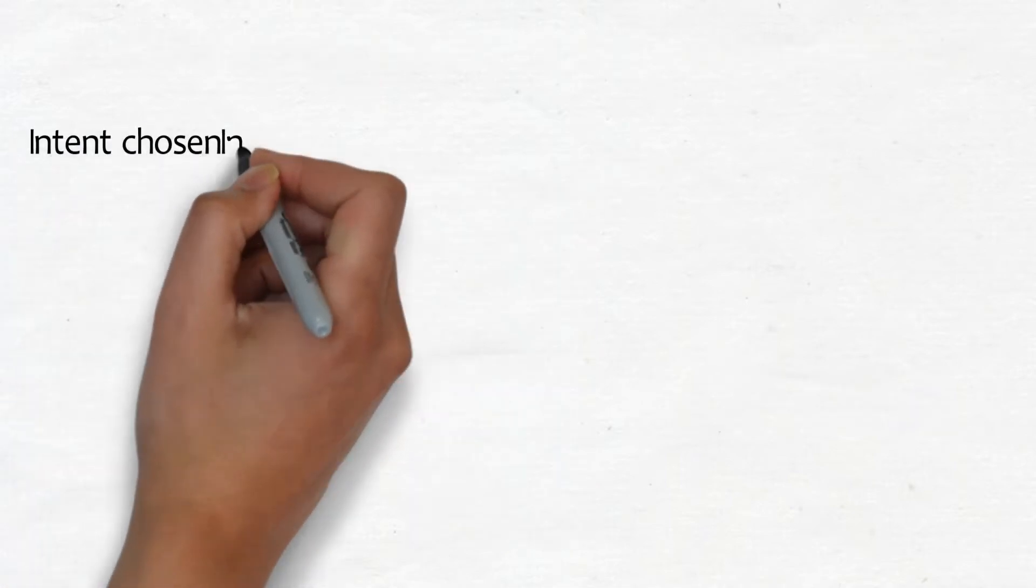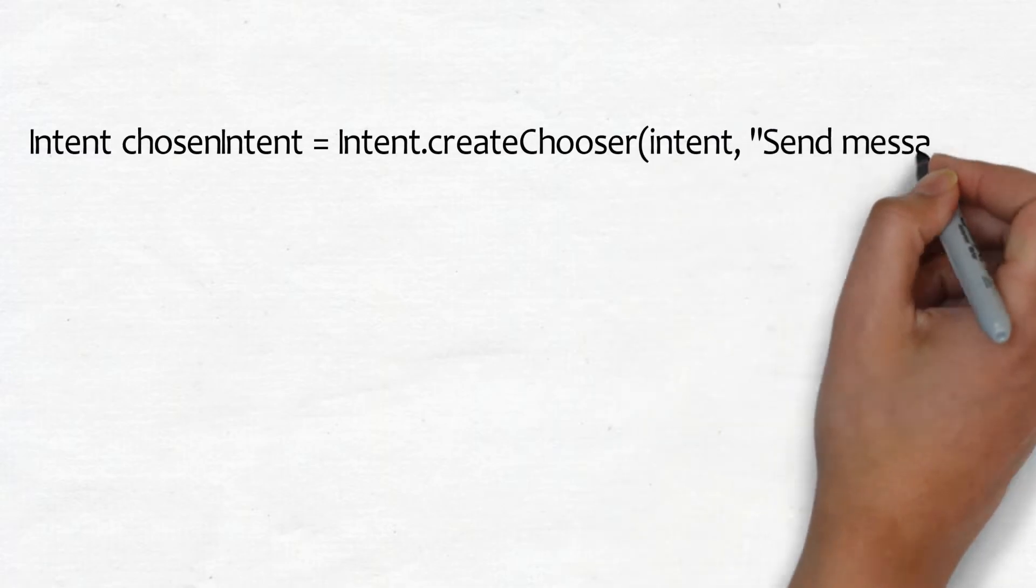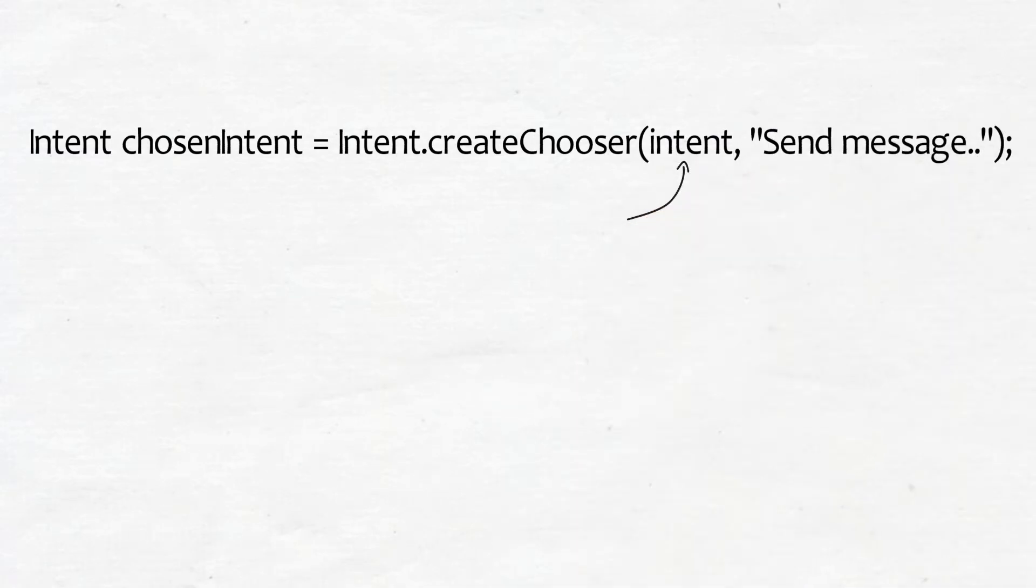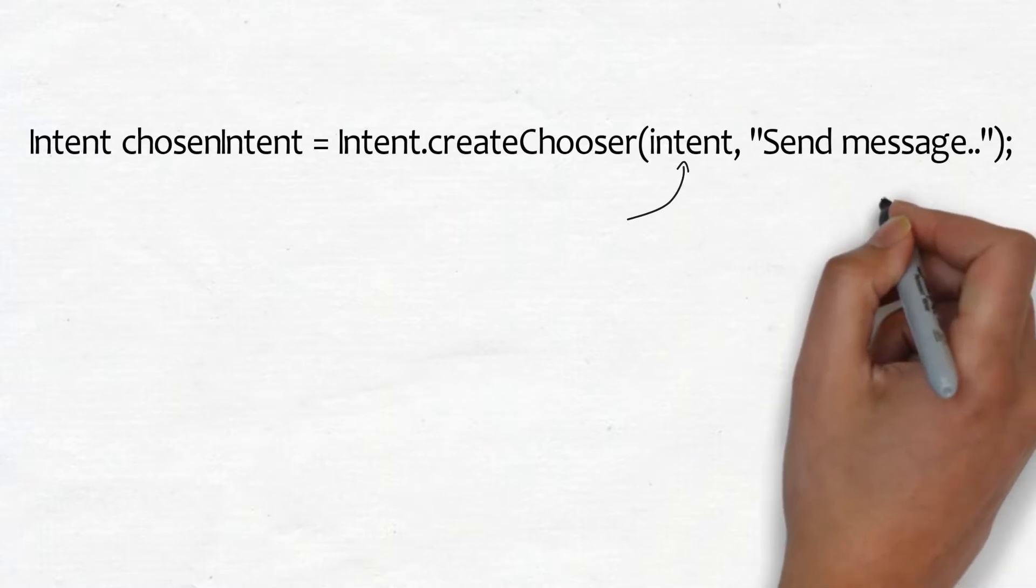You call the createChooser method like this. The method takes two parameters, an intent and an optional string title for the chooser dialog window.